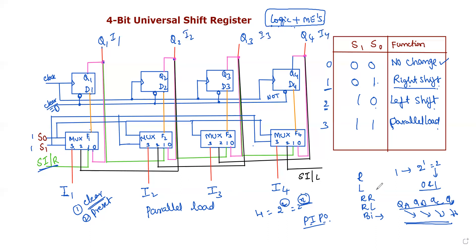For parallel load operation with selection inputs 1-1, inputs I1, I2, I3, I4 are directly connected to the four flip-flops. This is the parallel load operation. The function table summarizes all operations, and the universal shift register concept is explained theoretically along with the circuit diagram.